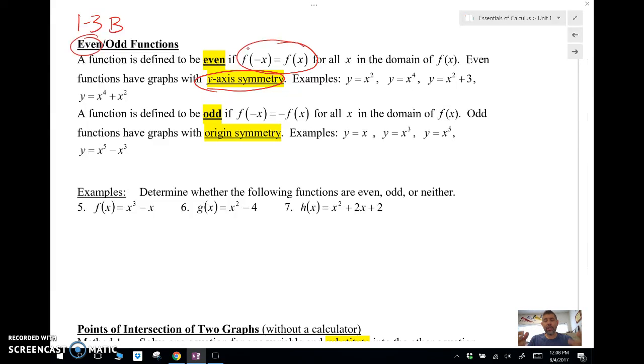We did in the last video for y-axis symmetry, some examples of even functions are y equals x squared, x to the fourth, and so forth. An odd function, it's like odd, weird—it's not really weird, it's just odd.